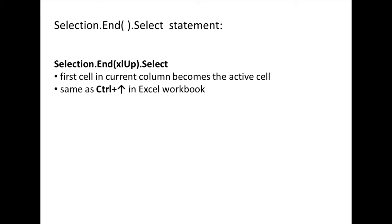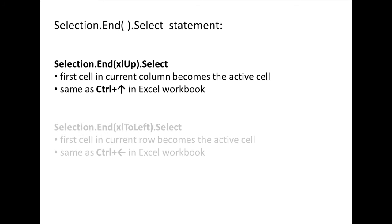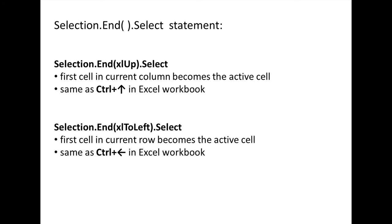If XLUp is placed inside the parentheses, the active cell will move to the first cell in the current column of the data region. This statement acts like the Ctrl+Left Arrow shortcut in the Excel workbook environment. If XLToLeft is placed inside the parentheses, the active cell will move to the first cell in the current row of the data region. This statement acts like the Ctrl+Left Arrow shortcut in the Excel workbook environment.